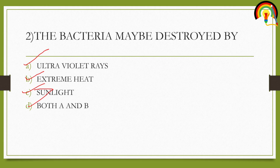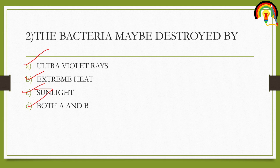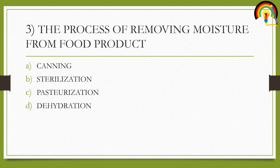UV rays are capable of destroying bacteria. Heat also destroys bacteria, except thermophiles. Sunlight does not destroy bacteria fully — it can only partially extend the shelf life of a product for some days. Extreme heat and ultraviolet rays are both capable of destroying bacteria, so the answer is D — both A and B.